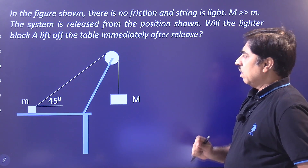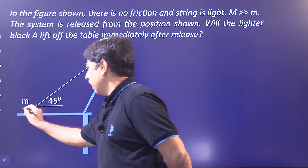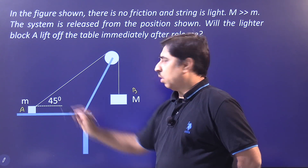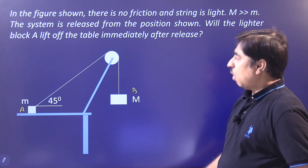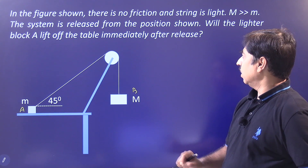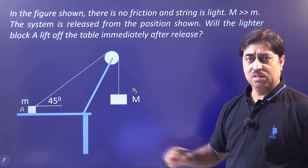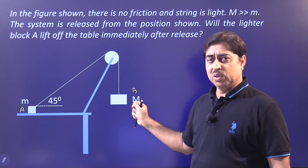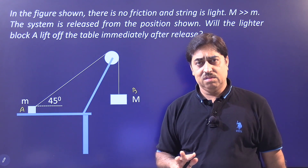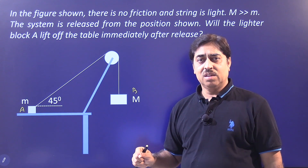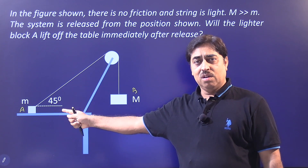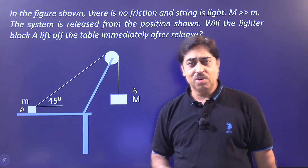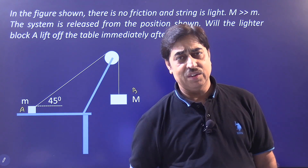Will the lighter block A — this is block A and this is block B — will the lighter block A lift off the table immediately after the system is released? You are holding this system at rest in this particular position, you release it. Immediately after the release, will this block leave the table? Will it take off from the table? That is the question you have to answer.